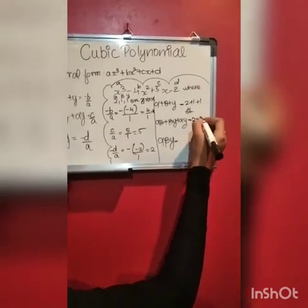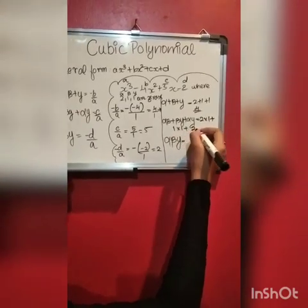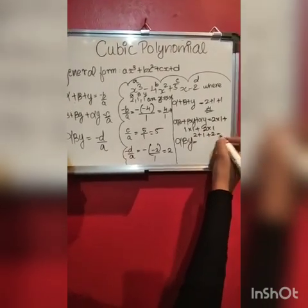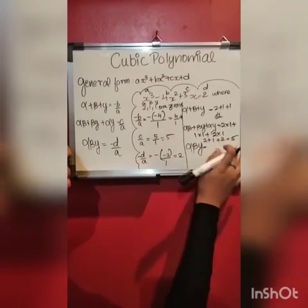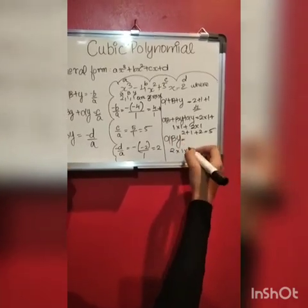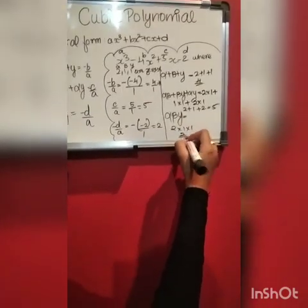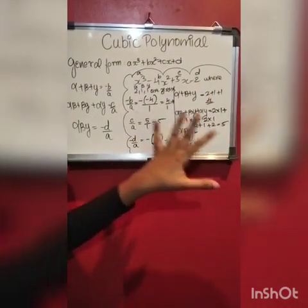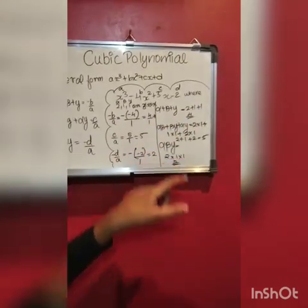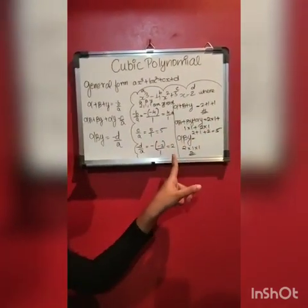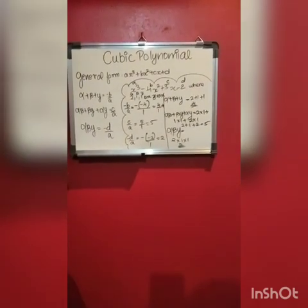Next, alpha into beta plus beta into gamma plus alpha into gamma: that is 2 into 1 plus 1 into 1 plus 2 into 1, which gives 2 plus 1 plus 2 equals 5. This matches c by a which is 5. Finally, alpha into beta into gamma: 2 into 1 into 1 equals 2, which also matches. So the coefficient terms equal the zeros terms — hence verified. We got the correct answers: 4 equals 4, 5 equals 5, and 2 equals 2. This is the relationship between zeros and coefficients in both cubic and quadratic polynomial.